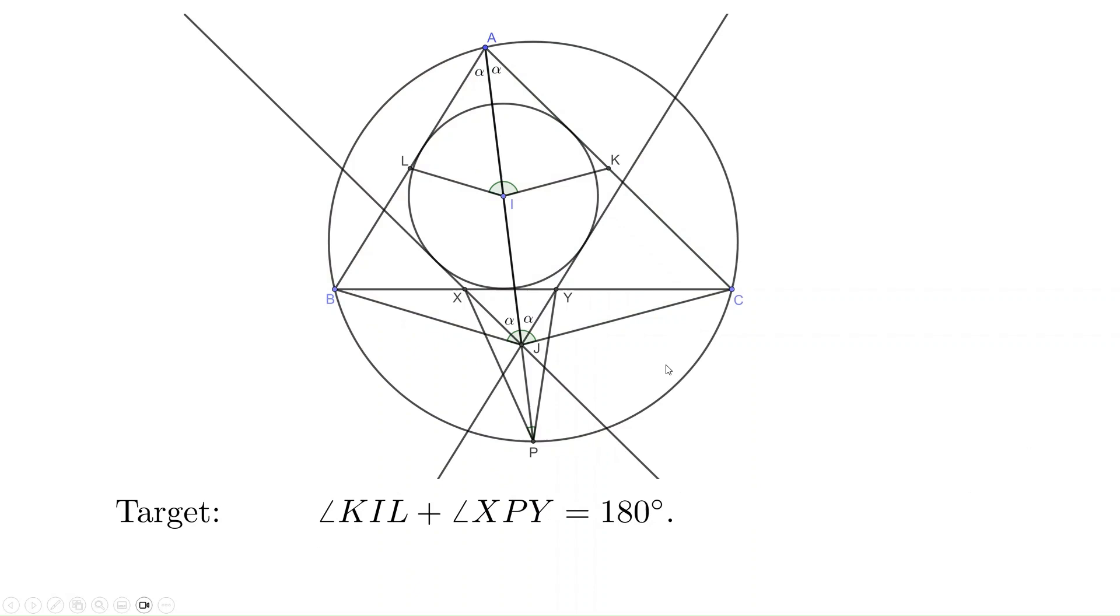Our original target is that angle LIK plus angle XPY equals 180 degrees. Now we transfer to a new target: angle BJC plus angle XPY equals 180 degrees.